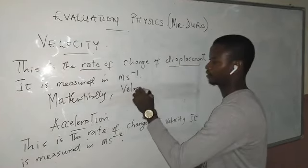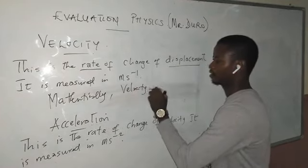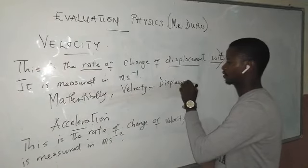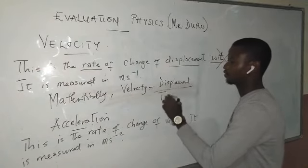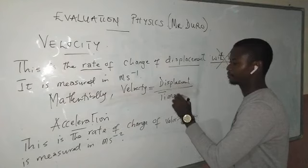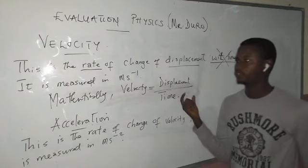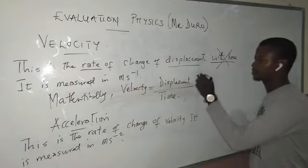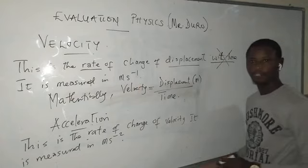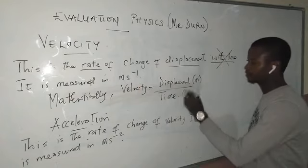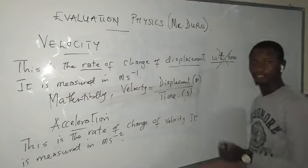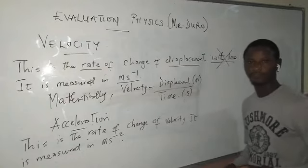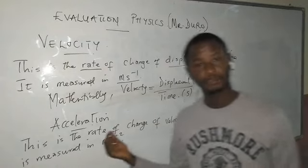Mathematically, velocity equals displacement divided by time. That is how the unit was derived: the unit of displacement is meters, and the unit of time is seconds, so meters divided by seconds gives us meters per second.